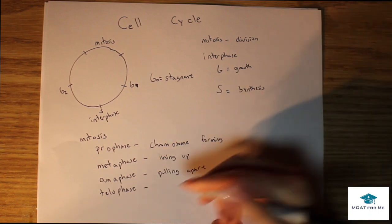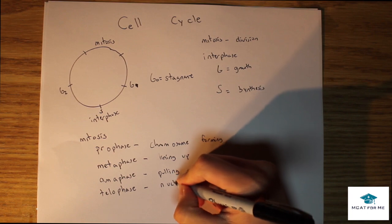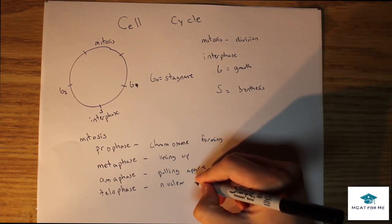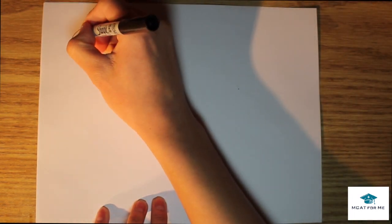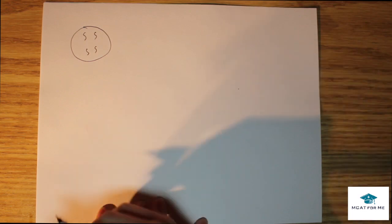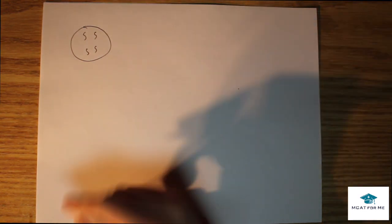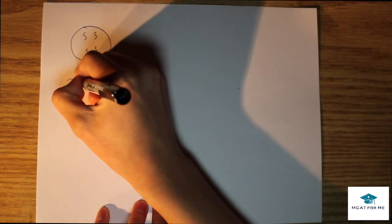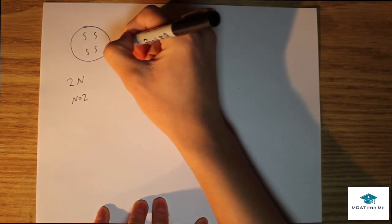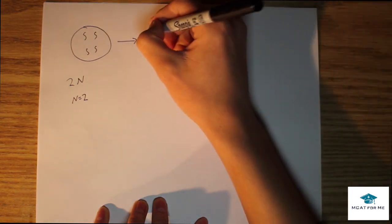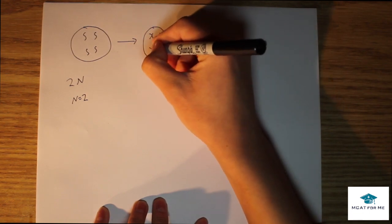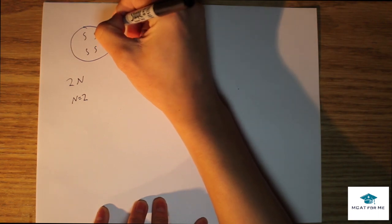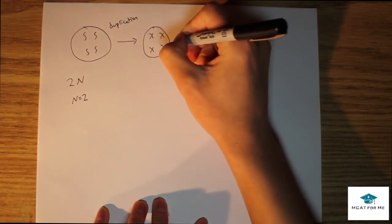Telophase, the nuclear envelope is now starting to surround each of the new cells, but we haven't completely divided. So we're going to see what these actually mean. We're going to start off with this cell right here, and it has four chromosomes like that. We're going to say that this is diploid, so it will be 2n and n equals 2. The first thing that's going to happen is interphase. In interphase, it's going to duplicate its DNA, so everything is going to have two like that.